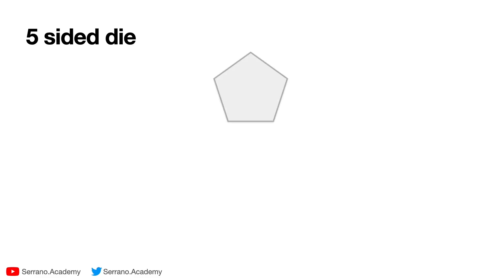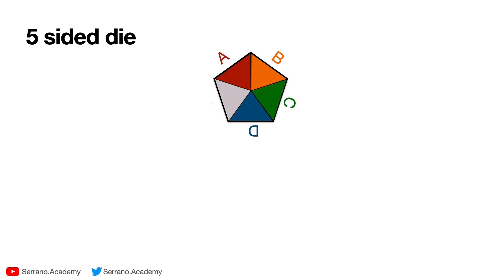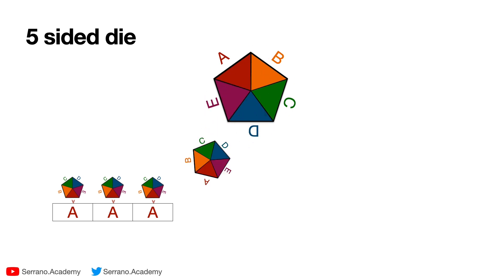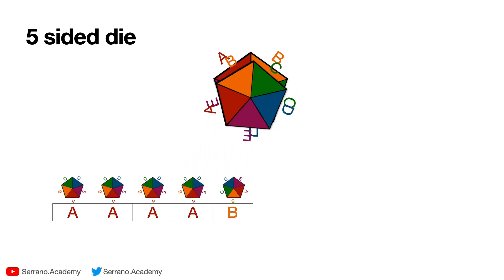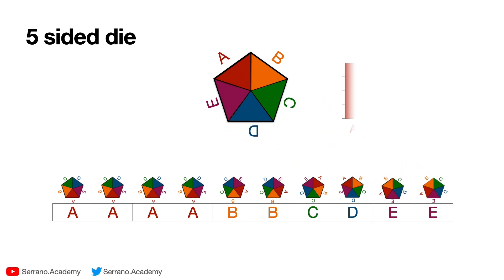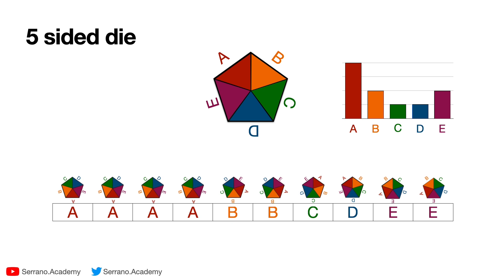Let's start by considering a five-sided die with sides labeled A, B, C, D, and E. I know it's hard to make a five-sided die in real life, but let's just pretend we have one. Now I'm going to toss this die 10 times and I get the following: first A, then A again, A, A, then B, B, C, D, E, and then E. Here's the histogram of results: four times A, two times B, one time C, one time D, and two times E.